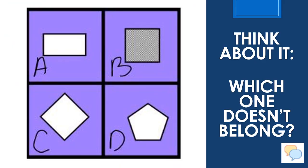Think about it. Which one doesn't belong? Look at this set of four polygons. A polygon is a two-dimensional figure that is closed and has straight sides. Decide which one doesn't belong with the other three. What is different about the one polygon when compared to the others? Jot down your thoughts on paper. You can also discuss with someone if they are nearby.